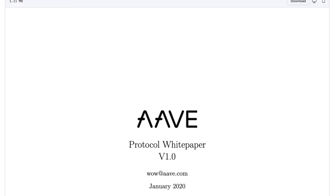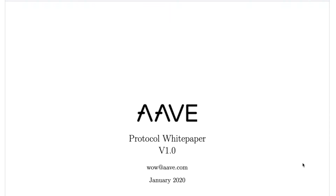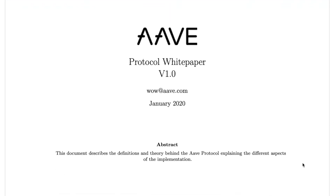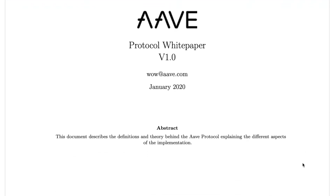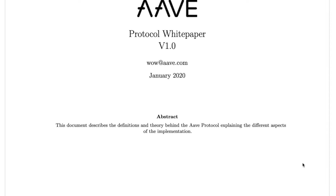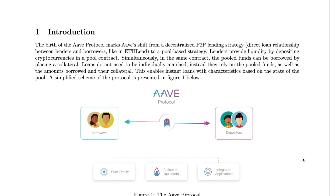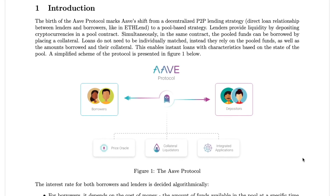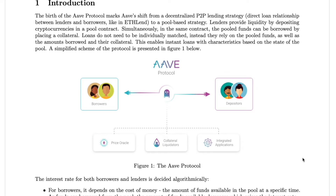So what is it? Aave is a DeFi protocol that allows people to lend and borrow crypto. Originally it was known as ETHLand when it launched in November of 2017, but was rebranded to Aave in 2018. The founder is Stany Kolachoff, and he's been amongst the crypto space for a while. He's an avid programmer who went to law school.